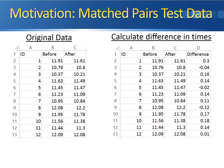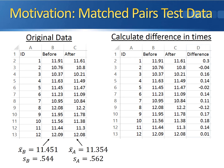Here's the sample data we're going to use for this problem. The original data consists of the individual before and after times for each subject. We can calculate the sample mean and sample standard deviation for each. The sample mean running time for the old shoes is 11.451 seconds with a sample standard deviation of 0.544 seconds. For the new shoes, the sample mean was 11.354 seconds with a sample standard deviation of 0.562 seconds. We want to determine if the after mean is significantly less than the before mean.